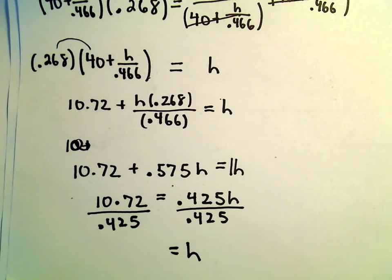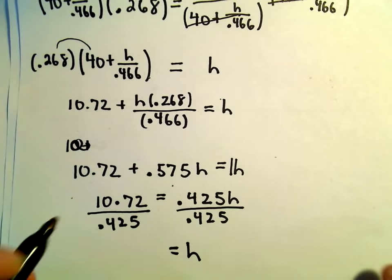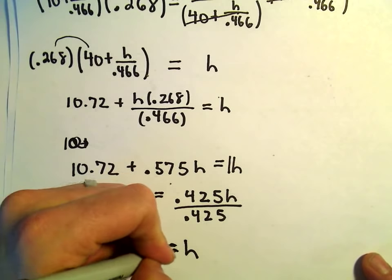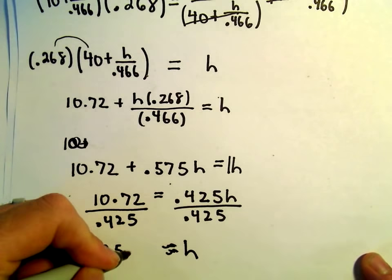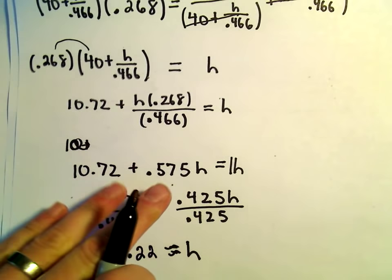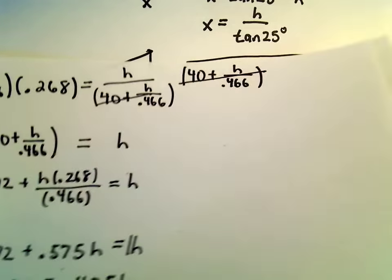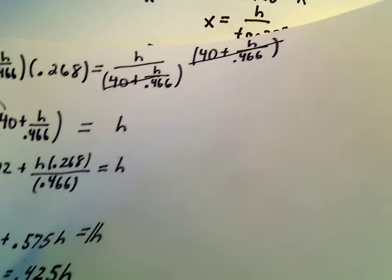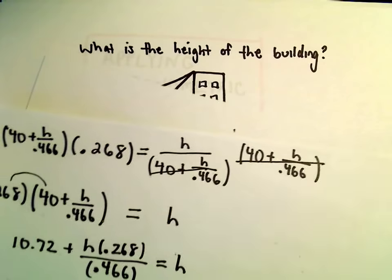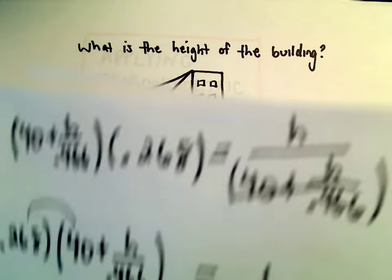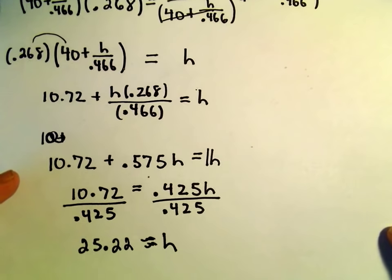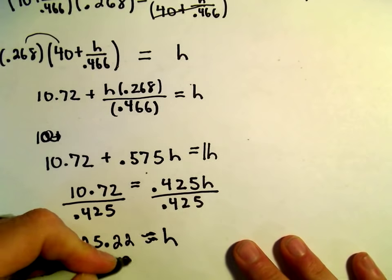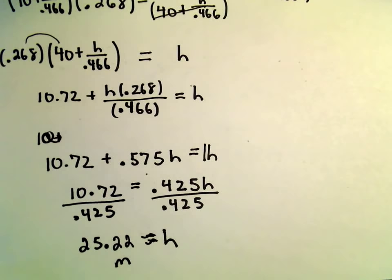So let me check this one real quick. So 10.72 divided by 0.425. I'm getting our building to be roughly equal to 25.22. And I think our original units were in meters. So I would say the height of the building is roughly 25.22 meters.